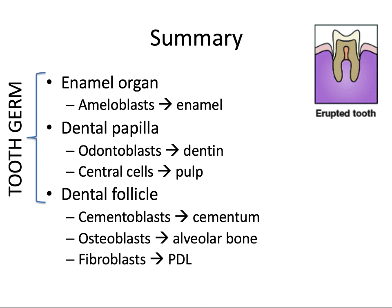In summary, we have our tooth germ, which includes the enamel organ, dental papilla, and dental follicle. Here are all the cells, cell layers, and materials that will eventually be produced by the cells of these certain layers — that will be an awesome reference for you. I really hope this has helped you understand the complex but also really cool odontogenesis process.